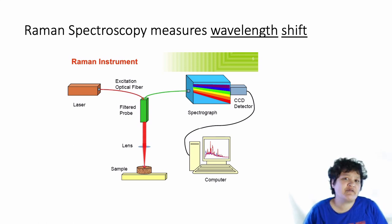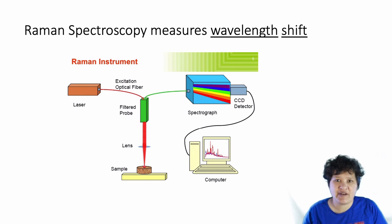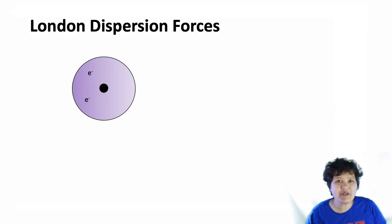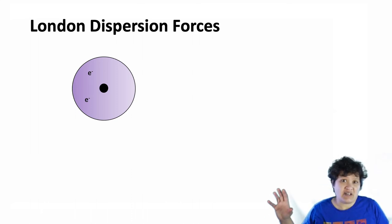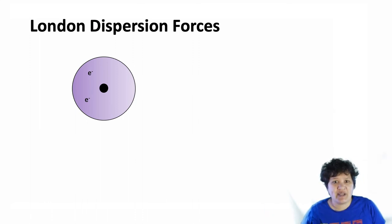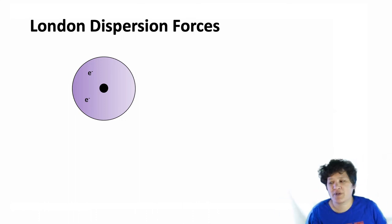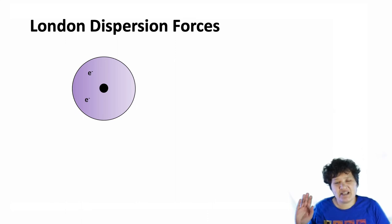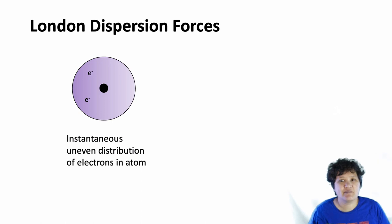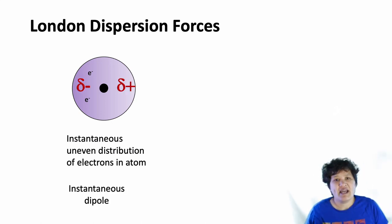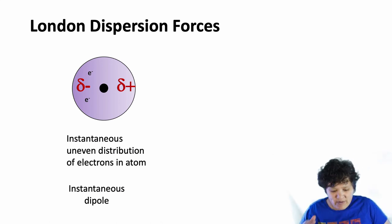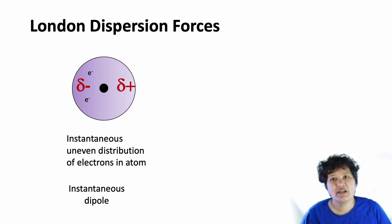Raman works very differently than fluorescence because we're not exciting electrons to different levels — we're actually changing the molecule in a fundamental way. Think back to Gen Chem and London dispersion forces, where you have an induced dipole. With a helium atom, sometimes the two electrons can both end up on one side, giving an instantaneous, uneven distribution of electrons — an instantaneous dipole. This is what's going on in Raman spectroscopy: we're actually inducing instantaneous dipoles.